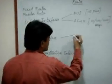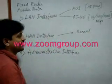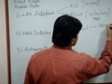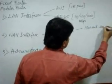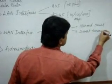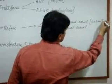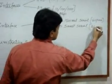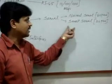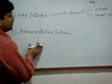For WAN interfaces, the first is the serial interface, used for WAN connectivity. There are two types of serial interfaces: the normal serial interface, which has 60 pins, and the smart serial interface, which has 26 pins. The function is the same for both; only the physical appearance is different. These are used for connecting branch offices or remote locations.